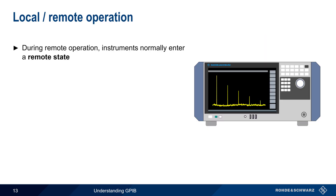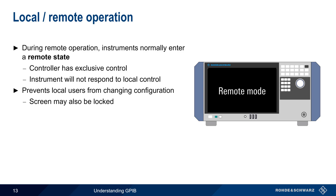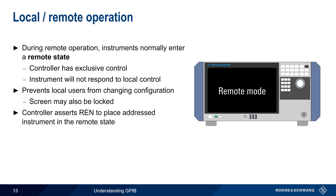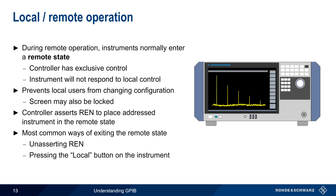When instruments are being controlled remotely, they normally enter a remote state in which the controller has exclusive access over the instrument — that is, local control via the front panel or user interface is not possible. Remote mode is intended to prevent problems that might arise from local users making changes during remote operation. The screen may also be locked and display an indication that the instrument is under remote control. Asserting the REN line places an addressed instrument in remote mode, and the most common ways of exiting remote mode are either by unasserting REN or by pressing a special local button on the front of the instrument.